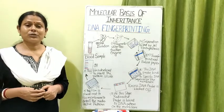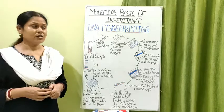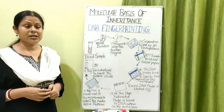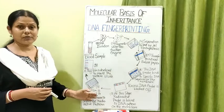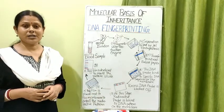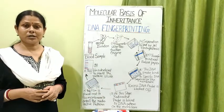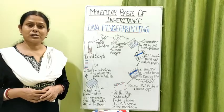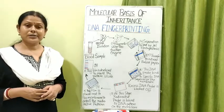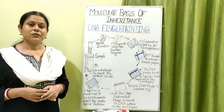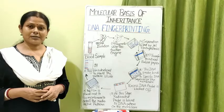This concludes the topic of DNA fingerprinting — covering the process through its various steps and its applications in the field of molecular biology. With that, we have come to the end of the chapter on the molecular basis of inheritance. The next chapter to be taken up is human diseases, which will be covered in the next class.